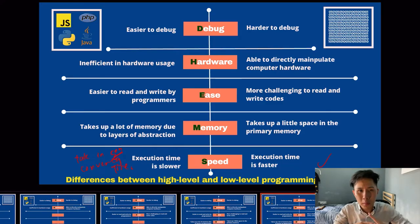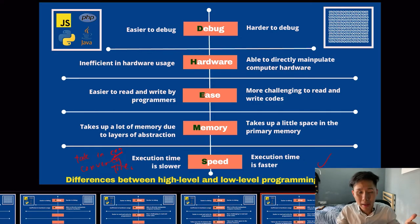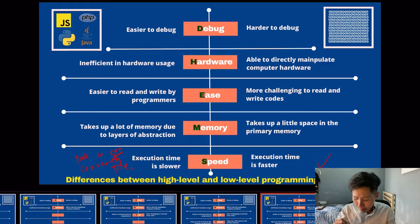We will learn more about programming in Chapter 7. For now, you just have to remember how to categorize the two types and what the advantages and disadvantages of each are. In the next video, we are going to learn about the translator, which is used to translate all these programming languages into machine code.